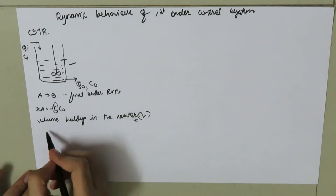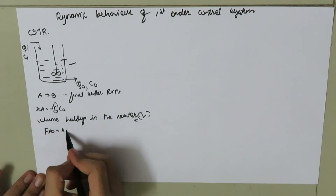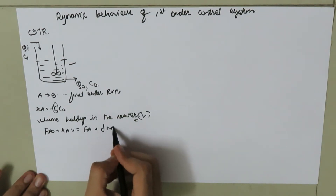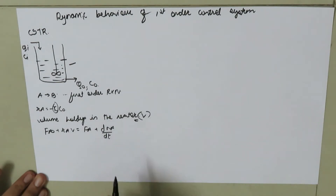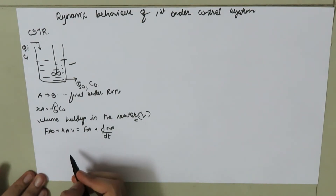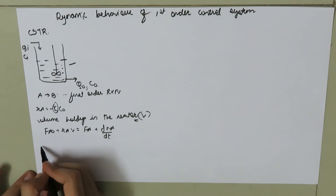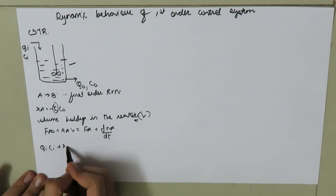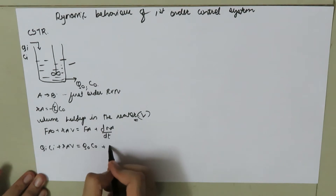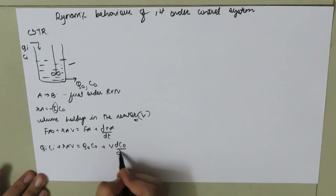Recalling the mole balance equation from CRE: FA-naught plus RA times V equals FA plus dNA by dT. In similar fashion, we write the mole balance for this system where moles equals the product of volumetric flow rate and concentration. So: QI times CI plus RA times V equals QO times CO plus V times dCO by dT.